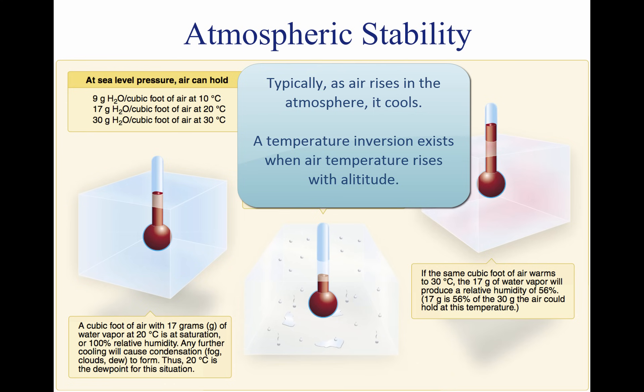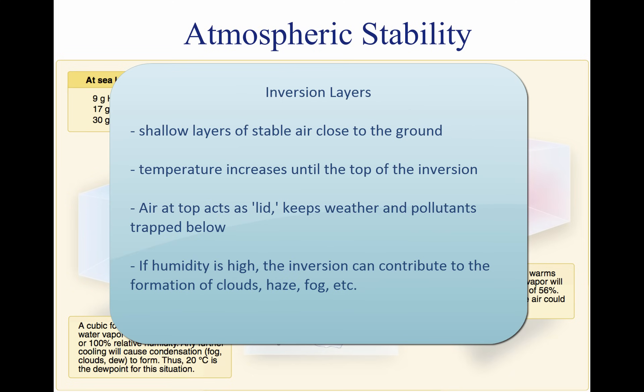Inversion layers are commonly shallow layers of smooth, stable air close to the ground. The temperature of the air increases with altitude to a certain point, which is the top of the inversion. The air at the top of the layer acts as a lid, keeping weather and pollutants trapped below. If the relative humidity of the air is high, it can contribute to the formation of clouds, fog, haze or smoke, resulting in diminished visibility in the inversion layer.